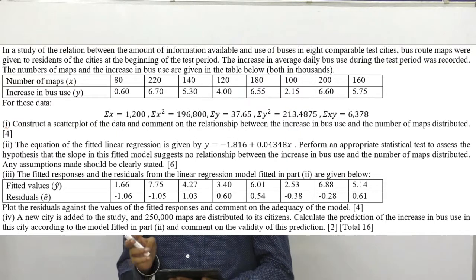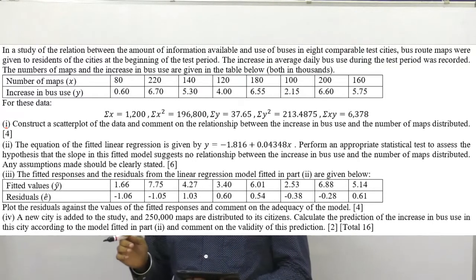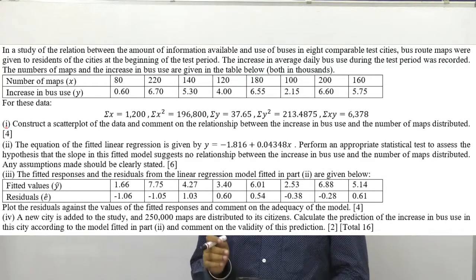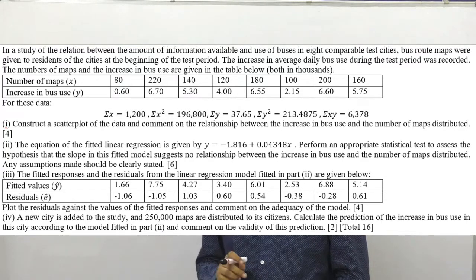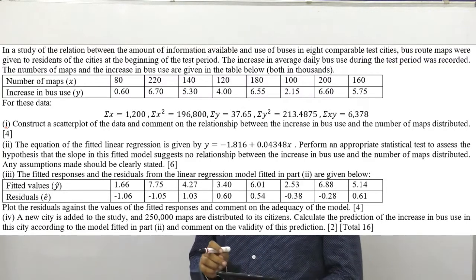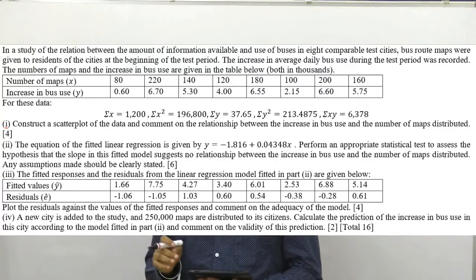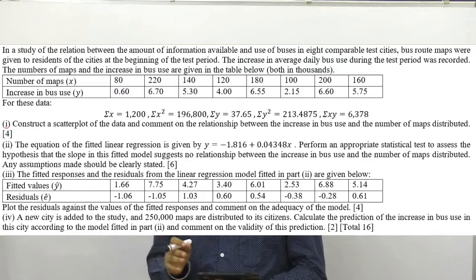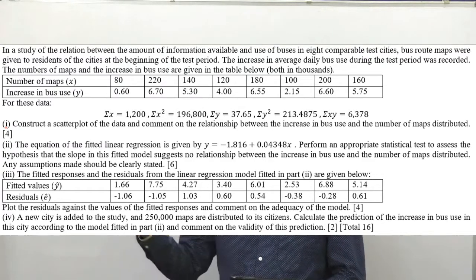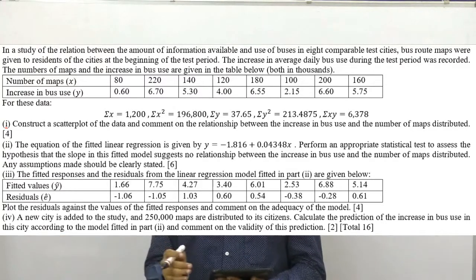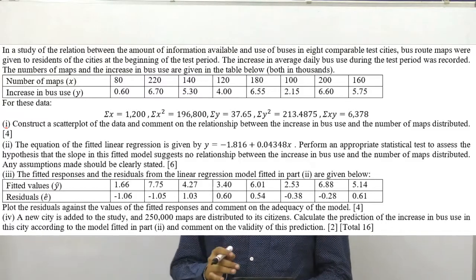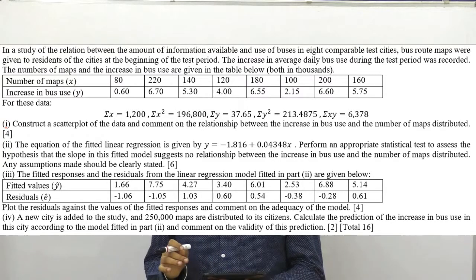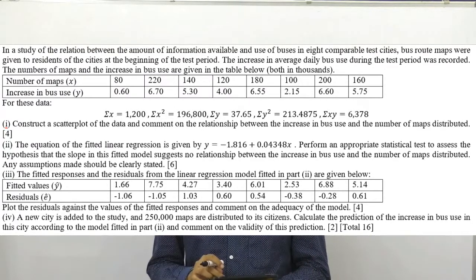The question reads: in a study of the relation between the amount of information available and use of buses in eight comparable cities, bus route maps were given to residents at the beginning of the test period. The increase in the average daily bus use during the test period was recorded. The number of maps and the increase in bus use are given in the table, both in thousands. Construct a scatter plot diagram and comment on the relationship between the increase in bus use and the number of maps distributed.